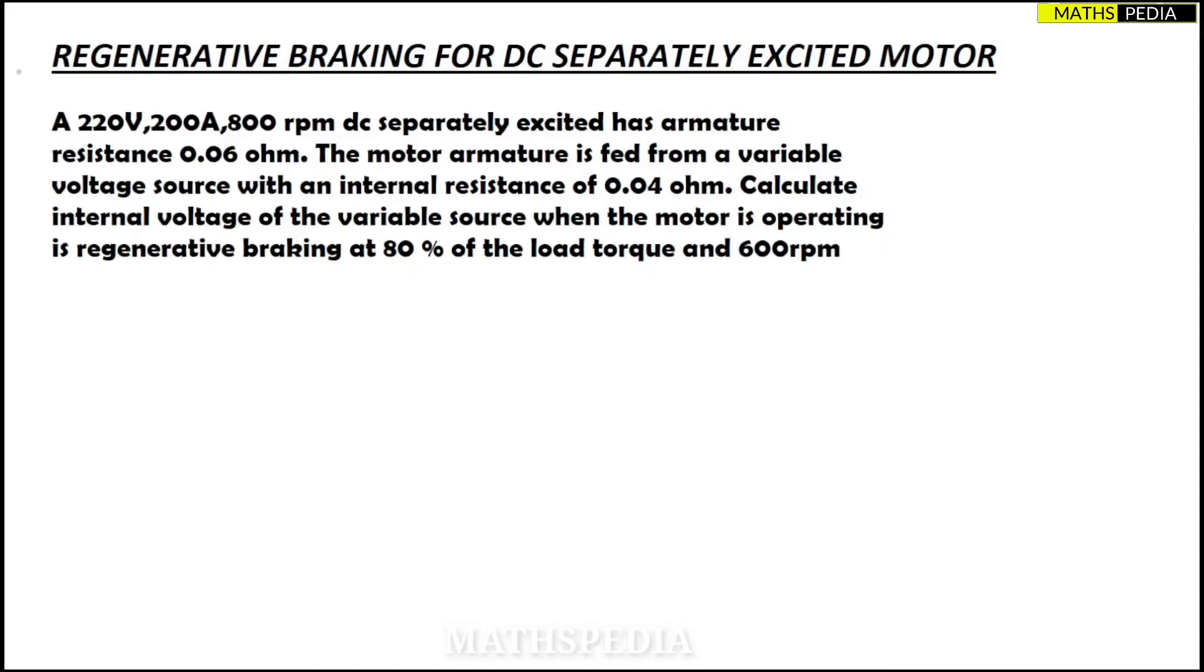In this video we are going to solve one question based on regenerative braking of a DC separately excited motor. Here we have the question: a 220 volt, 200 amps, 800 rpm DC separately excited motor has armature resistance 0.06 ohm.